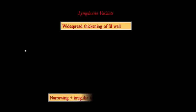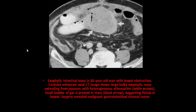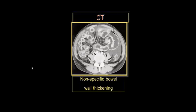The lymphoma variant shows widespread thickening of the small intestinal wall with irregular thickening of the folds. Lymphoma can present in many different conditions. Here, bowel wall changes represent infarction with black attenuation as seen in ischemia. Another example shows non-specific bowel wall thickening not related to a specific type of attenuation.